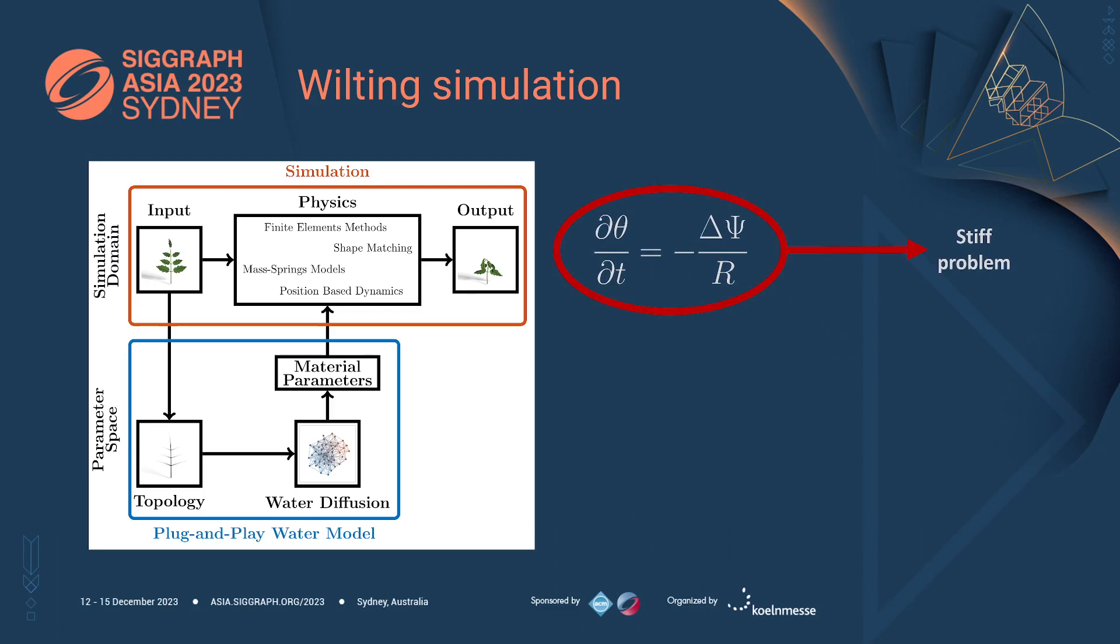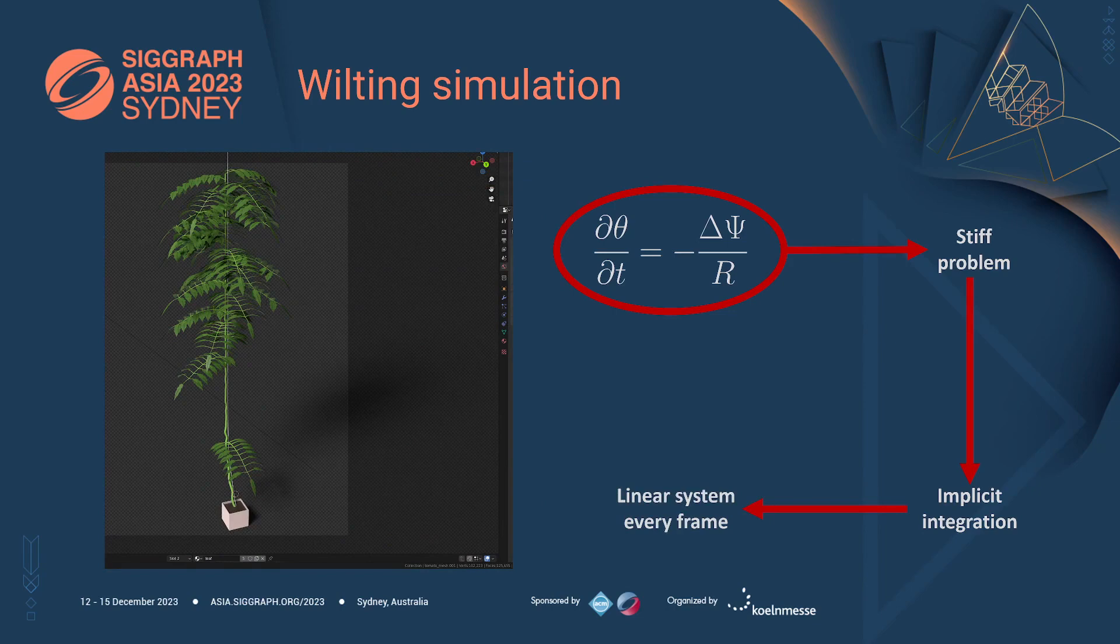Unfortunately, the pressure is a function of the water content, which makes this equation a stiff problem. And stiff problems usually require the introduction of implicit integration schemes, which in turn involves solving linear systems at every simulated frame. And when it comes to modeling plants, this system can become very large. The huge number of variables involved in the system will make the simulation unfeasible very quickly.